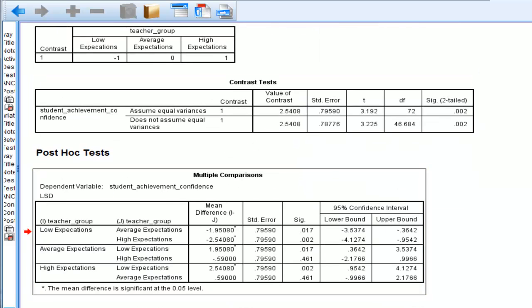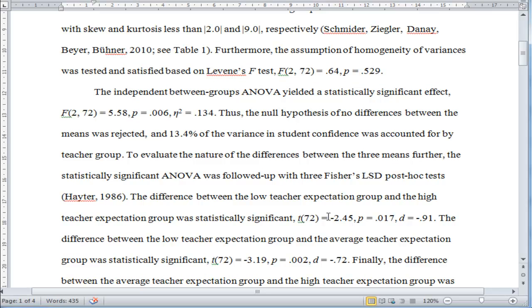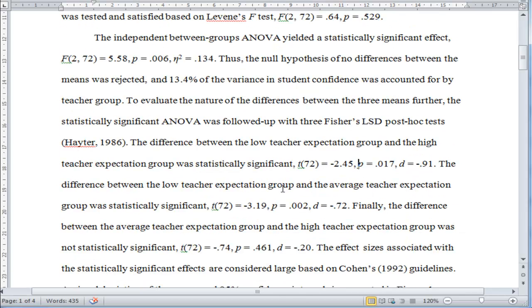That's a nice little trick for doing Fisher's LSD, and you want to get the T values. So here I've got the T and the degrees of freedom. Then I do the difference between low teacher expectation group and average teacher expectation group, which was also statistically significant, and a Cohen's D of negative 0.72.